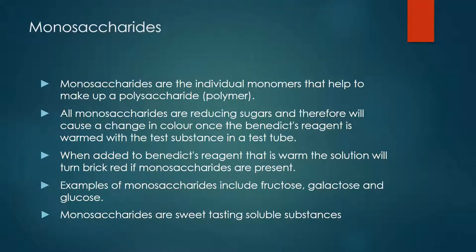Monosaccharides are the individual monomers that make up a polysaccharide, which is essentially a carbohydrate. All monosaccharides are reducing sugars and therefore will cause a color change when added to Benedict's reagent which has been warmed in a test tube. The color change we will see is from a bluish color to brick red, indicating the presence of a monosaccharide. It's important to remember that all monosaccharides are reducing agents, and that's why we see the color change.